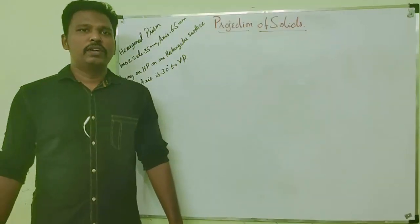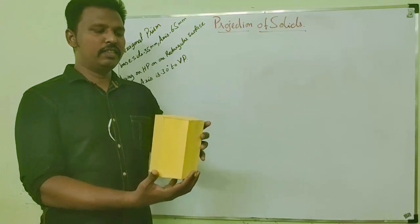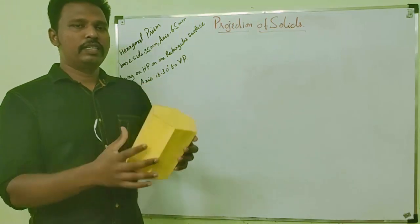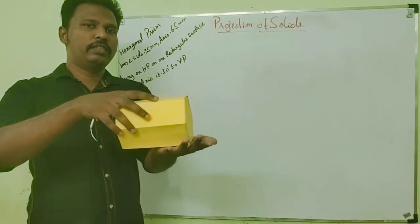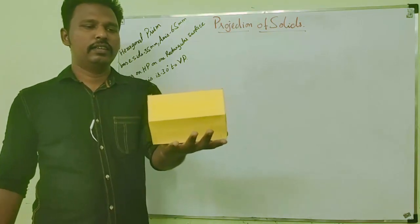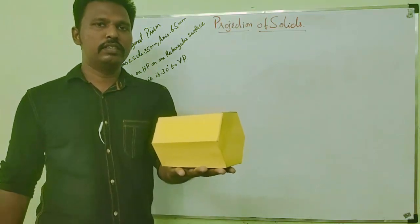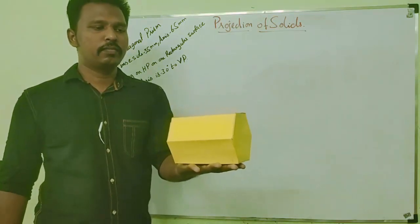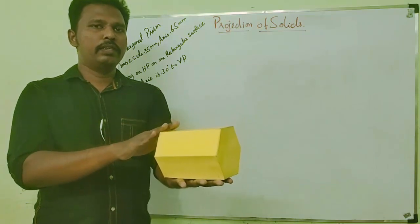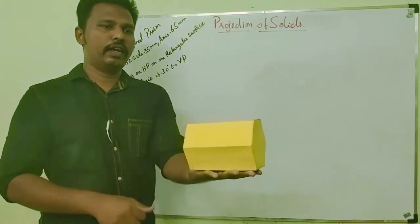Welcome back to projection of solids. In this question the solid given is a hexagonal prism. A hexagonal prism is resting on HP with one of its rectangular faces. The axis is inclined at 30 degrees to VP, so this is the orientation — the axis is inclined at 30 degrees to VP and the hexagonal prism is resting on HP with one of its rectangular surfaces.